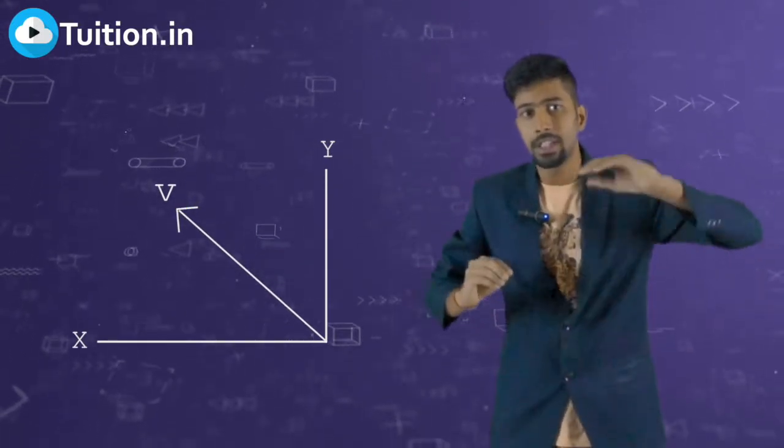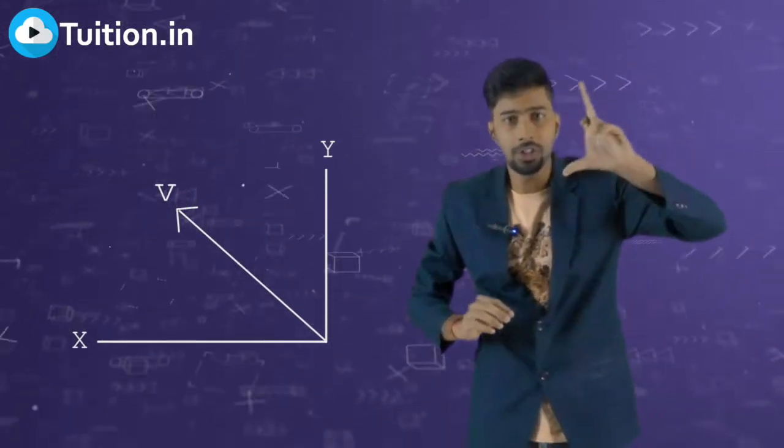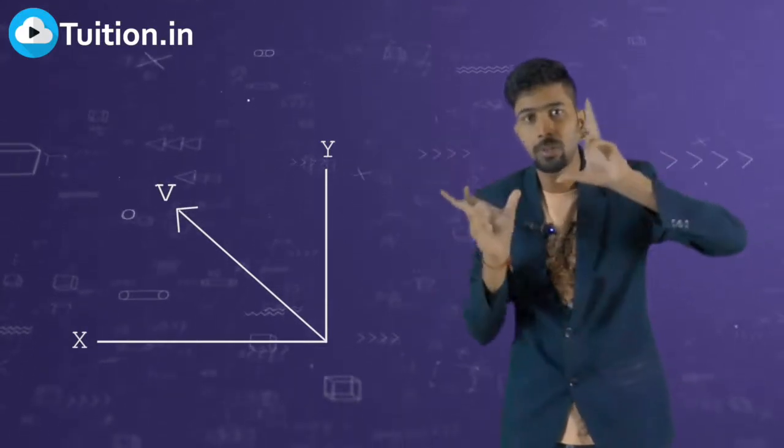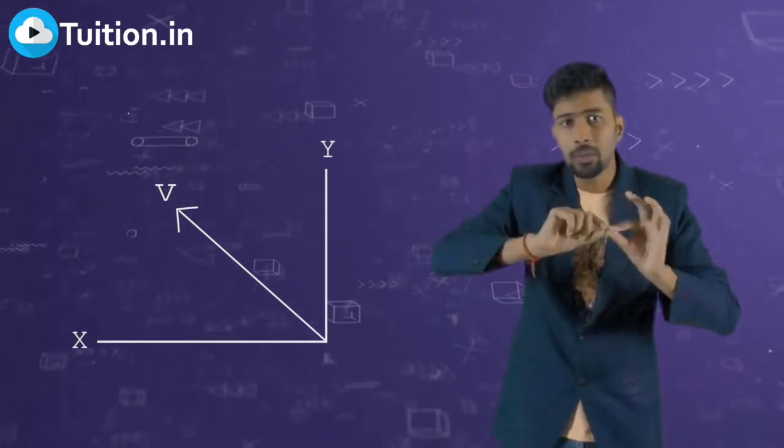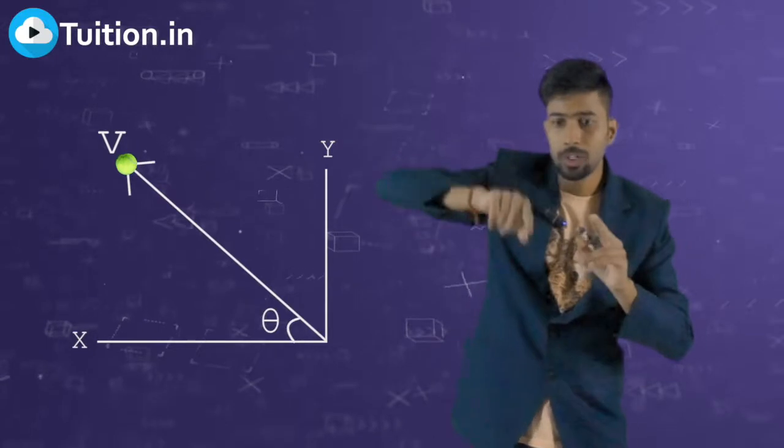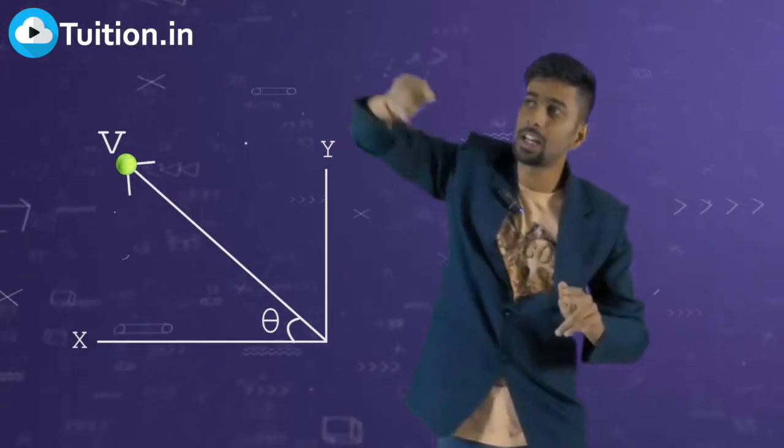So imagine if the Y component of velocity did not change and the X component of the velocity did not change, the body will keep following its path. So if you threw it at an angle theta, it will go in a straight line at an angle theta.